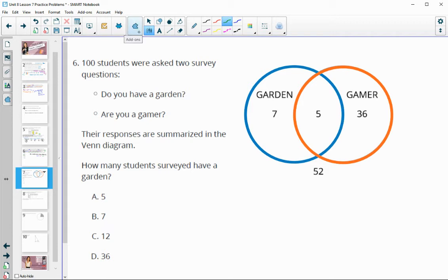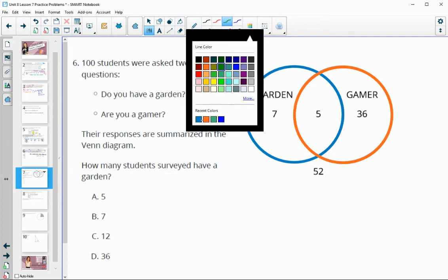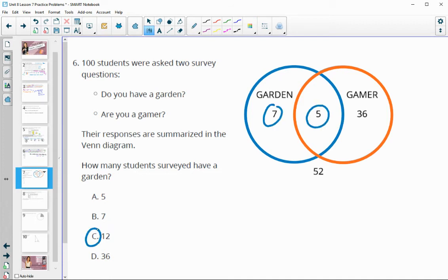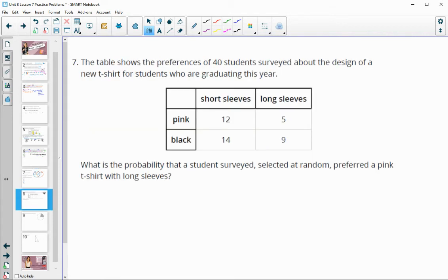Number six, 100 students were asked two survey questions. Do you have a garden or are you a gamer? How many students surveyed have a garden? So as long as they are in this blue circle, they have a garden. The table shows the preferences of 40 students surveyed about the design of a new t-shirt for students who are graduating this year. What is the probability that a student selected at random preferred a pink t-shirt with long sleeves? So they needed a pink t-shirt and they wanted it to have long sleeves. So who's in both of those was 5 out of 40 students.